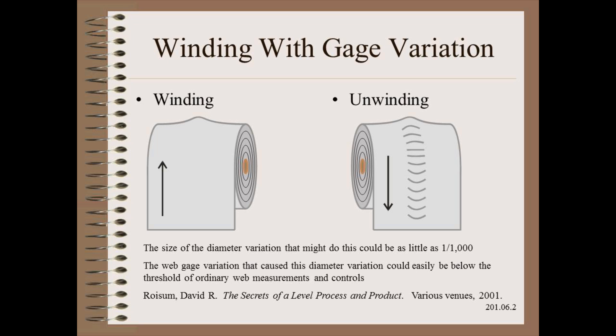However, by far the most common cause is not making a web baggy, but rather making a web that has excessive caliper, gauge, or thickness variation, which stretches the web into bagginess when wound. Very often, it is difficult to see the diameter variation that is the result.